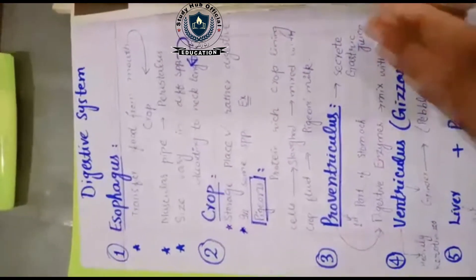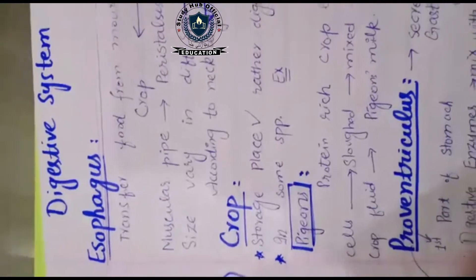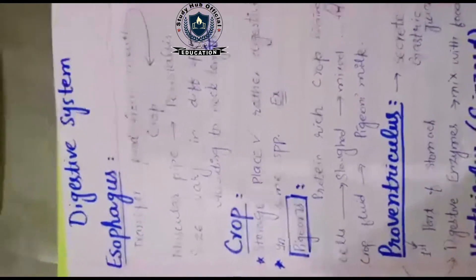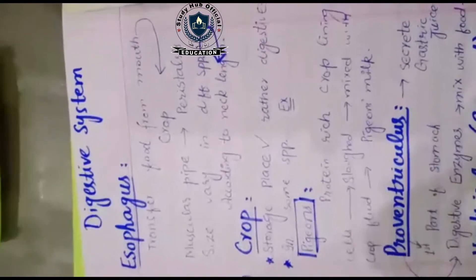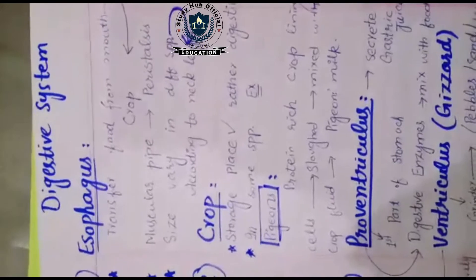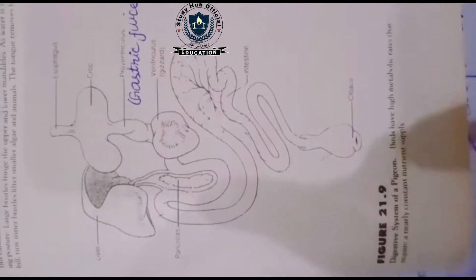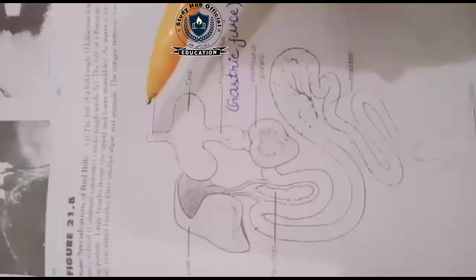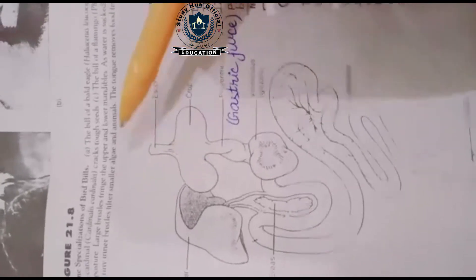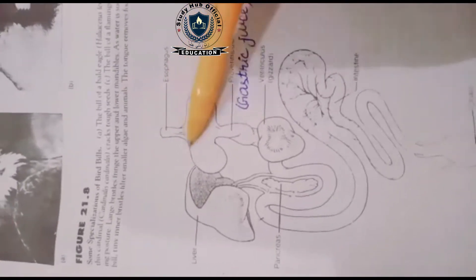First, look at the esophagus. Esophagus in human beings transfers food from the mouth to the stomach. If we look at the bird's digestive system structure-wise, in this diagram, this is a complete digestive system of birds. First is the esophagus. What is its work? To take the food from the mouth to the crop. The next structure is the crop.